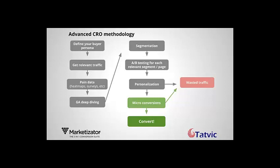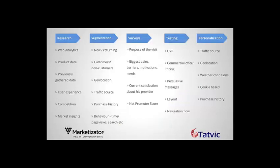In the first phase, which is research, you go to web analytics, gather product data, and use your previously gathered data. For example, on an e-commerce website, you look at the amount of spending, the CLV score of visitors, and then you can target them differently based on their score. You also use user experience tools or competition tools such as Alexa or SimilarWeb, or you gather marketing insights.